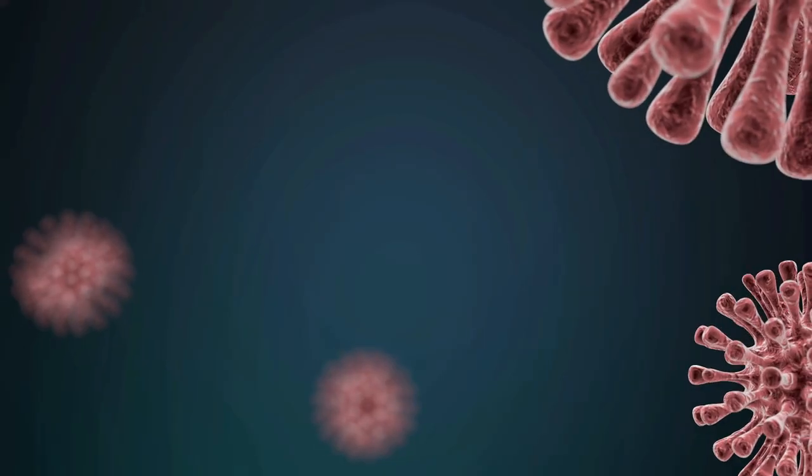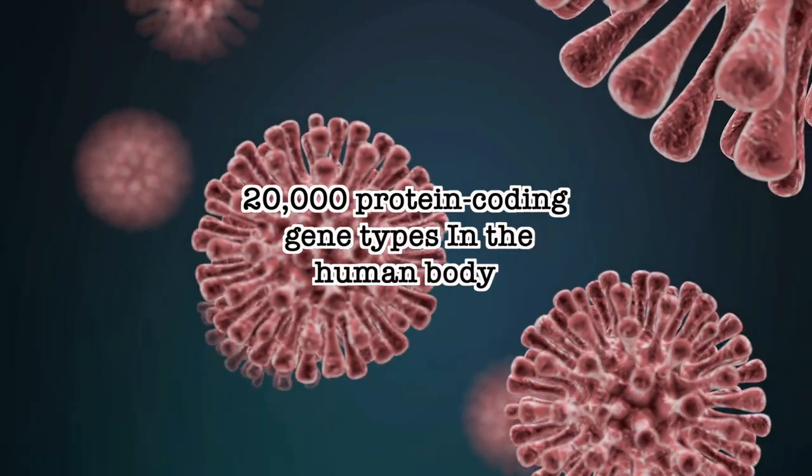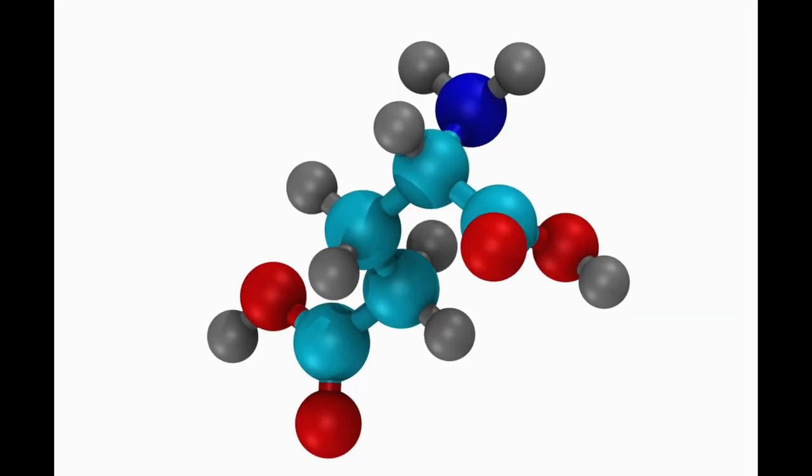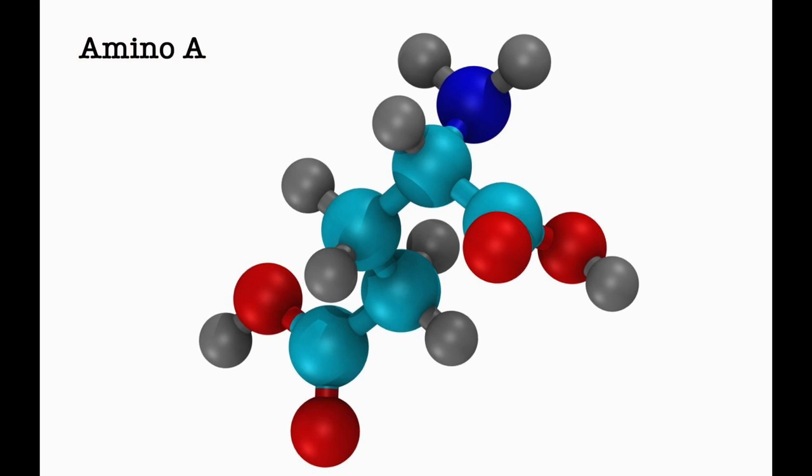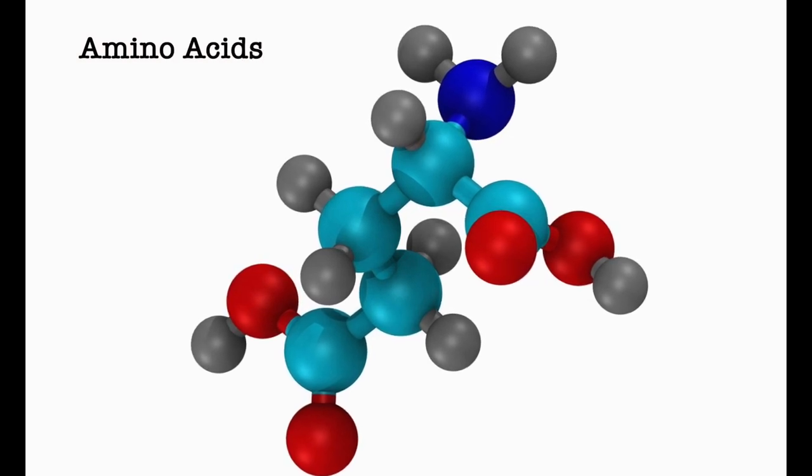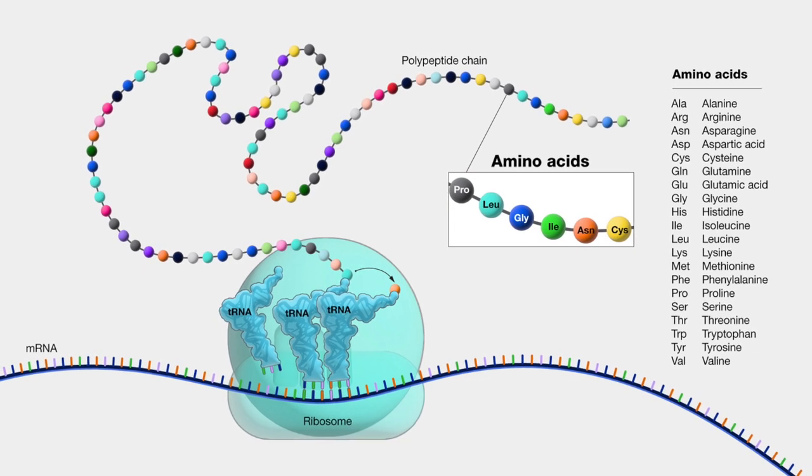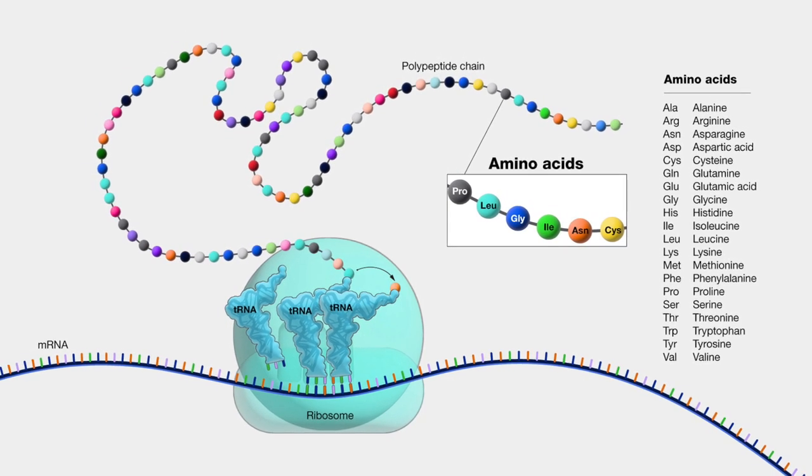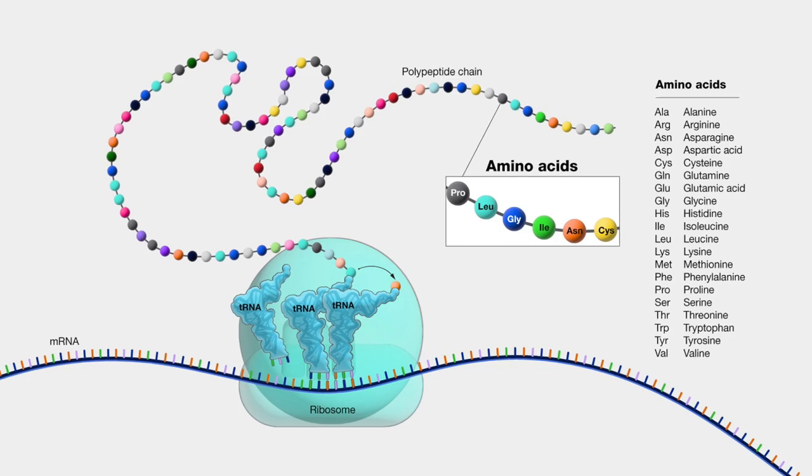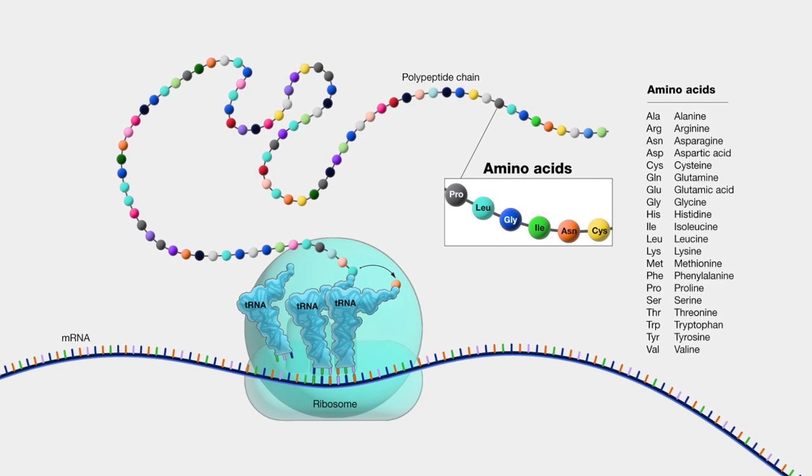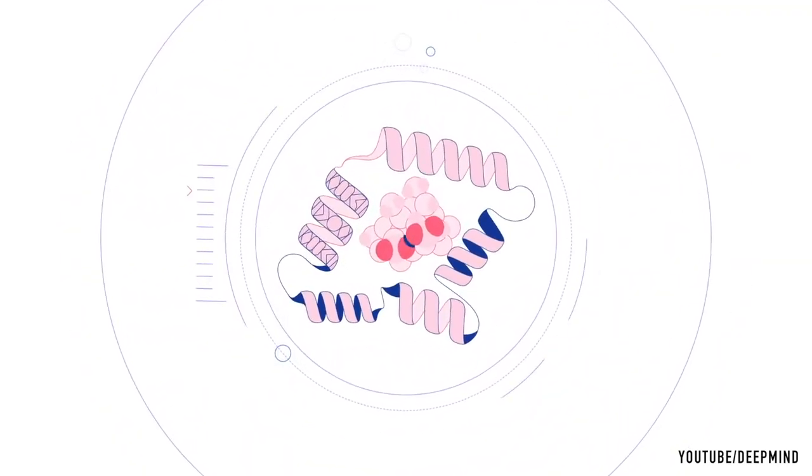There are about 20,000 protein coding gene types in the human body. Each protein is made up of a sequence of smaller parts called amino acids, and they are connected in a certain order. 20 different kinds of amino acids exist. The number of amino acids in protein can range from a few dozen to several thousands. Proteins, however, do not remain flat.